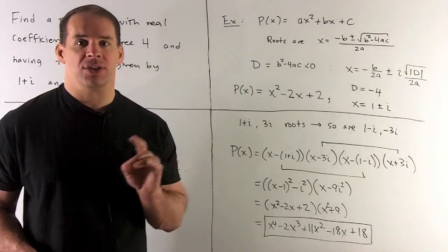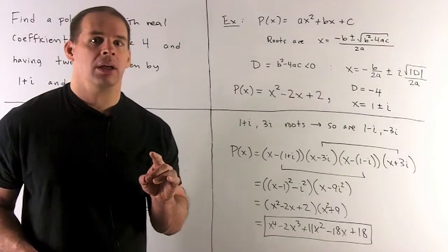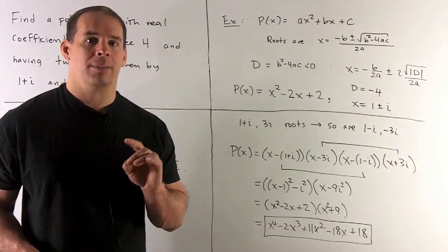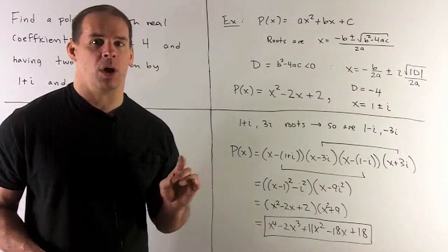i squared is minus 1, so this is x minus 1 squared plus 1, or x squared minus 2x plus 1 plus 1.